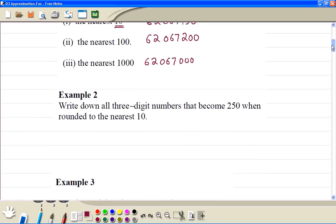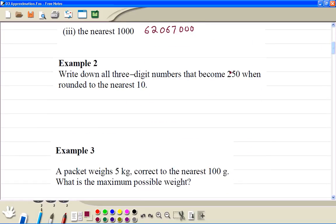Example 2, so the main number is 250. So we need to see which numbers we round it up. So if we have 246, this will change to 250. 247, 248, and 249. All of these numbers, we round it to 250.